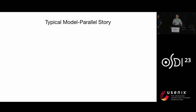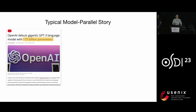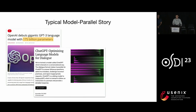Let me start with the typical story of why previously people talk about model parallelism. Three years ago, OpenAI released the GPT-3 model with 175 billion parameters. This model is recognized as one of the biggest breakthroughs in deep learning, and it powers exciting applications like ChatGPT, which is the biggest news in tech — the hype of the hype recently.